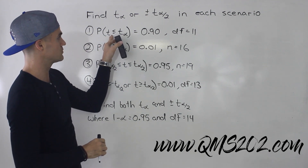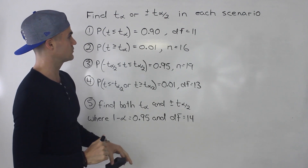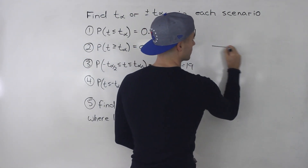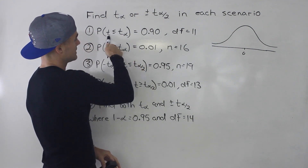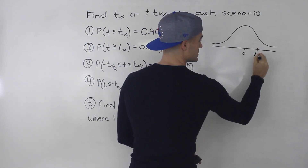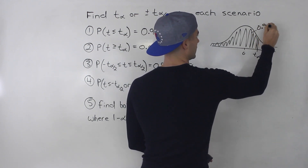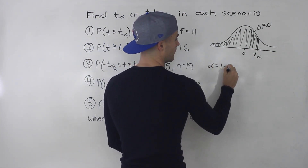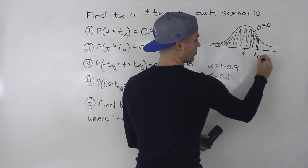So number one, we have the probability where the t distribution is less than or equal to t subscript alpha, and that probability is equal to 0.9, and the degrees of freedom is equal to 11. Now notice that this is going to be a one-tailed probability. So if we draw this out, zero is in the middle, and the area to the left of t alpha is 0.9. So alpha is basically going to equal 1 minus 0.9, which is 0.1.